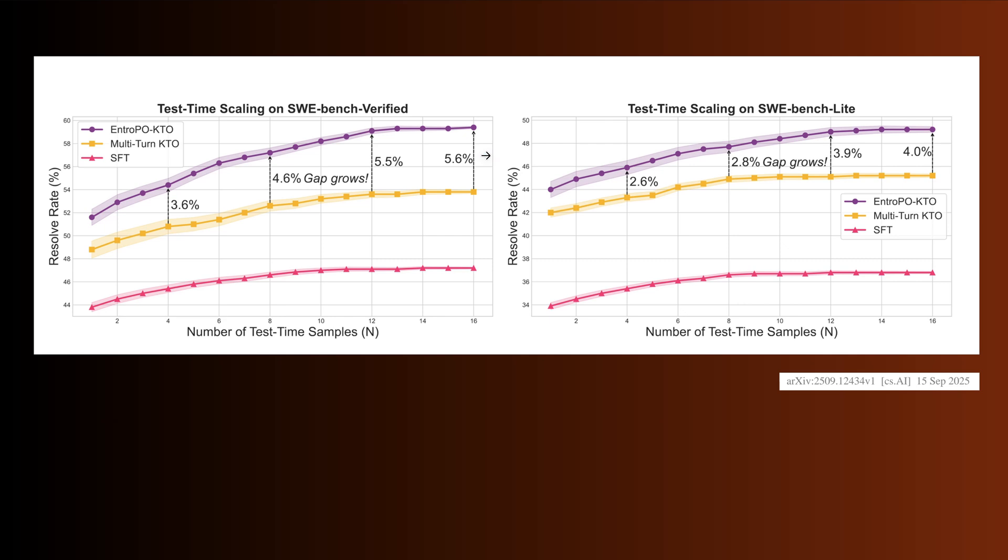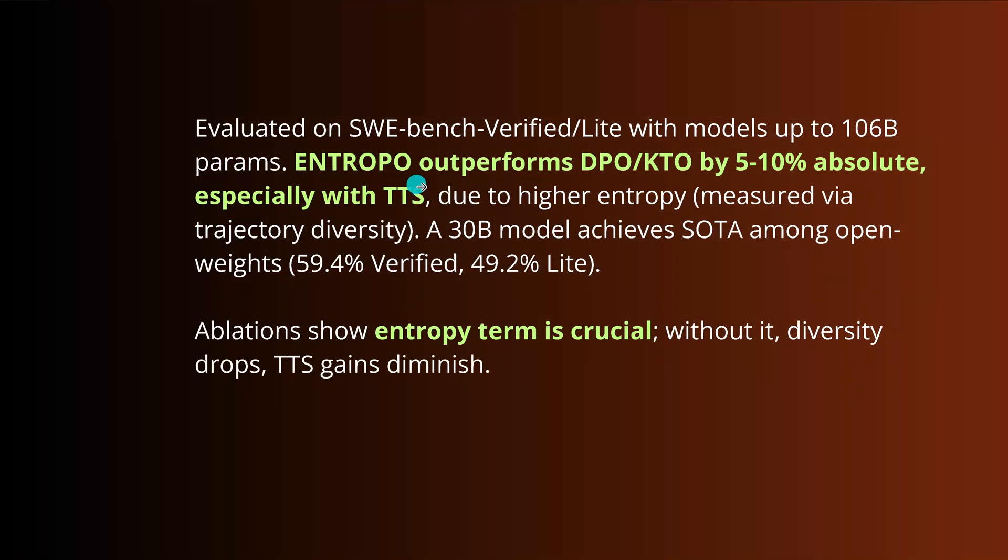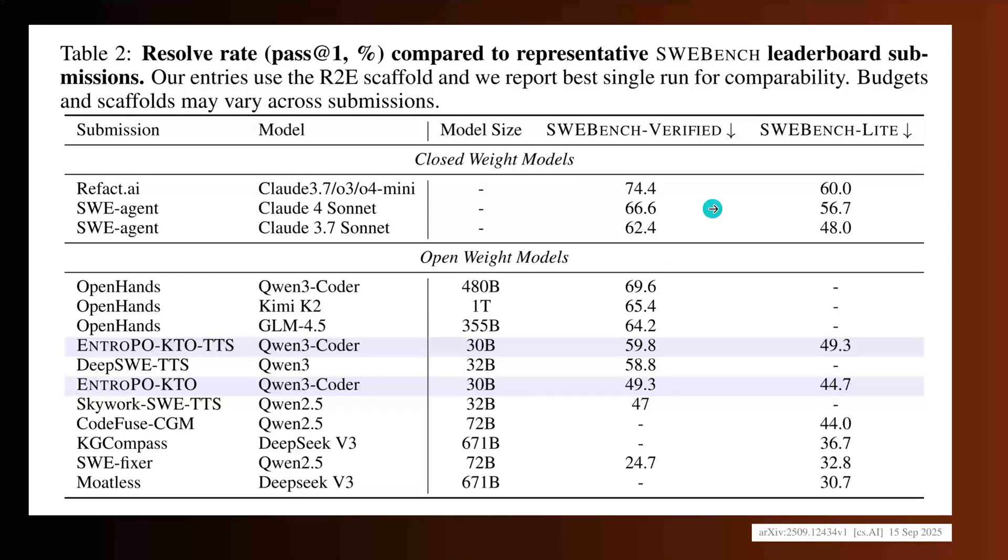You see exactly 3 to 5.6 percent performance gain with an entropy regularization term. Did we expect it? Yes, of course. We are looking for more novel ideas. We are not stuck to the old solution. We explore the solution space. Therefore, Entropo outperforms DPO by 5 to 10 percent absolute, especially with test time compute scaling due to higher entropy. Beautiful entropy term is crucial. Without this, we would not achieve these beautiful results. If you want to have the numerical table from all the benchmark data, this is for you. You see Entropo.